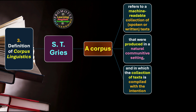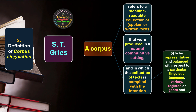The collection of texts is compiled with intention. How do we collect the texts? We have two intentions or goals. The first is to be representative and balanced with respect to a particular linguistic language variety, register, or genre. The second is to be analyzed linguistically — because we want to analyze them linguistically. So basically, this is the idea about corpus linguistics.